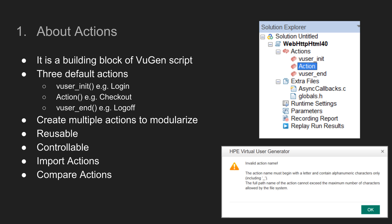This modularized approach allows you to reuse actions at any point in your VuGen script. These actions are highly controllable, meaning you can control the flow of actions in the runtime settings. It is also possible to import actions and compare two actions to see the differences and make appropriate changes. All action names must begin with a letter and contain alphanumeric characters only, including underscores, and must comply with the maximum number of characters allowed by the file system.